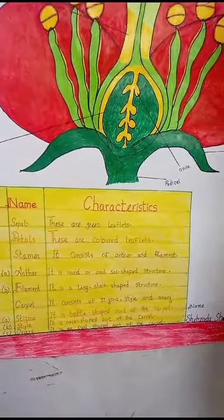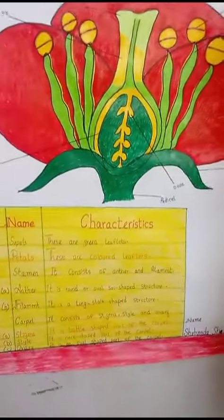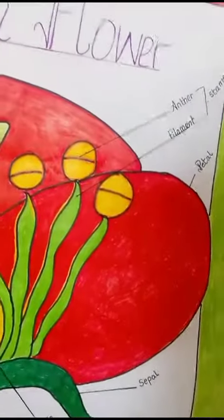The second part is petals. These are colored leaflets. The third part is stamens. There are two parts of stamens. It consists of anther and filament.